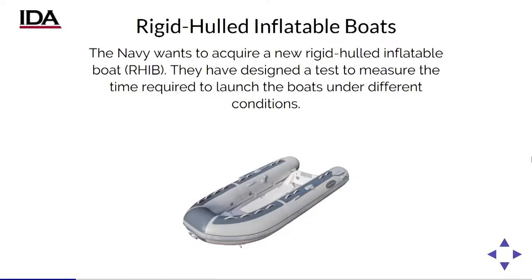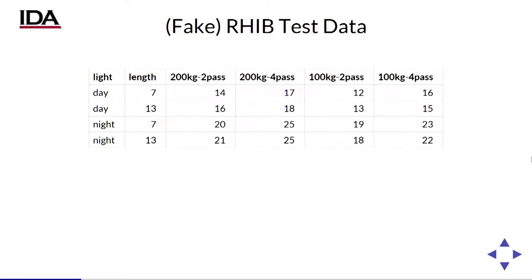Because the three of us work at IDA, we talk a lot about operational testing. Today we're going to use a made-up rigid-hulled inflatable boat, or RIB, as our example. The Navy wants to make a new boat — they've run a bunch of tests to figure out how long it takes to launch. They tried launching it day and night, with two different boat designs — a seven-meter and a 13-meter — with various passenger and cargo loads. This is made-up data, and we're going to keep coming back to it to talk about how you can analyze it and produce a report.